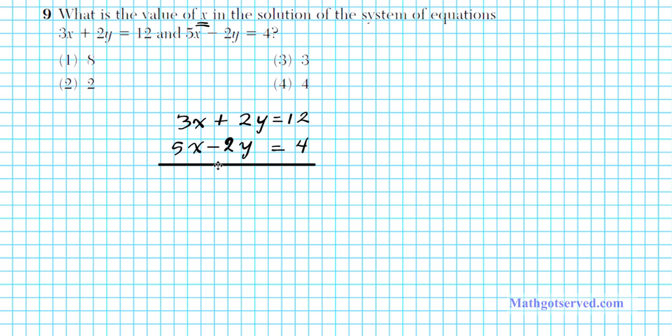Alright so just by simply combining equation one and two I will have 8x equals 16 because plus 2y minus 2y is equal to zero. Now let's go ahead and isolate x. You divide both sides by eight and your final answer x is going to be equal to two. So you can see that our answer for number nine is option number two.